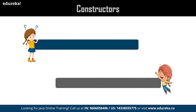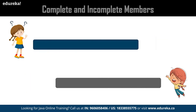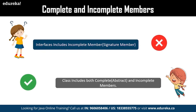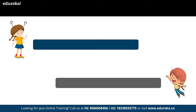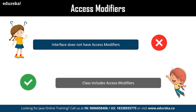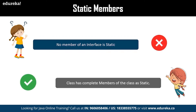The next difference is constructors — interfaces do not have constructors, while classes include them to set values to members of an object. The next difference is complete and incomplete members — interfaces comprise only signature methods, while classes include both data members (abstract members) and methods (signature members). On access modifiers, interfaces are public by default, whereas classes provide private access modifiers. Also, interfaces cannot have static members, whereas classes can.